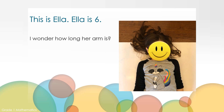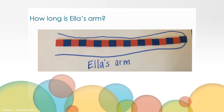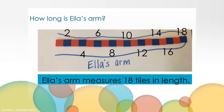This is my daughter Ella. Ella is six years old. I wonder how long her arm is. First, we traced her arm on the dry erase board. Then we used our tiles to measure her arm, because we were still trying to figure out how long Ella's arm is. Let's count by twos — I'm going to count the blue ones: 2, 4, 6, 8, 10, 12, 14, 16, 18. Ella's arm measures 18 tiles in length.